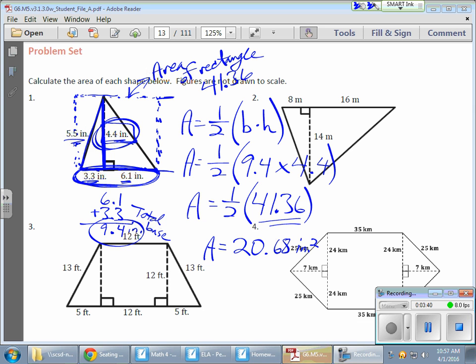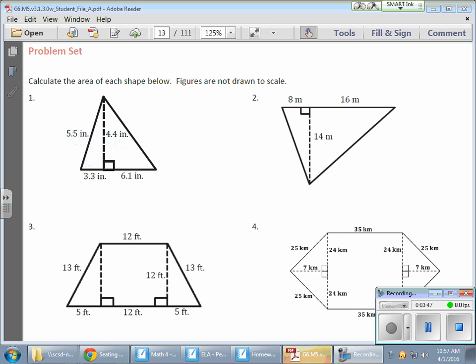Now the other thing that you could have done, which the curriculum wanted me to show the class - it was kind of neat - is to actually find the area of the little triangles inside, the two triangles that make up the entire triangle. In other words, find the area of this guy and find the area of this guy and then just add them together. Same premise though.